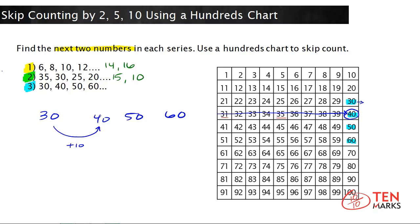So if we continue on from 50, you add 10, you get to 60, which is right here. If you add 10 again, you land on 70 and add 10 one more time, you land on 80. That means the missing numbers are 70 and 80.